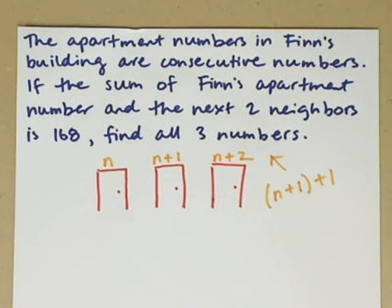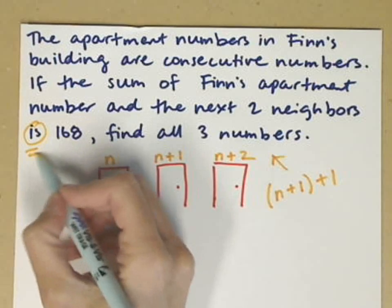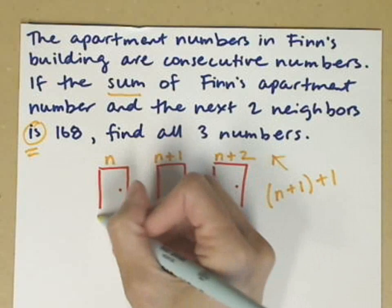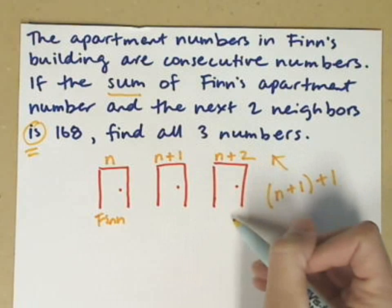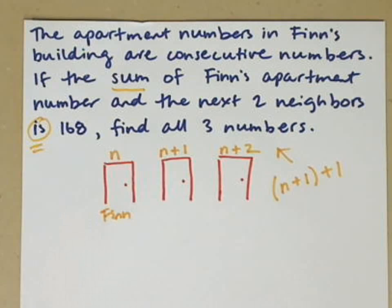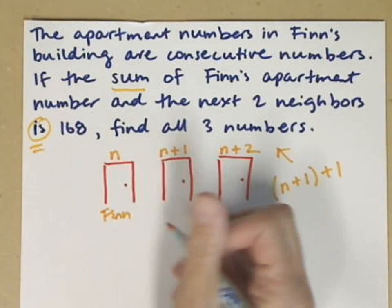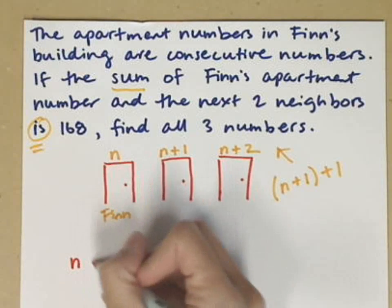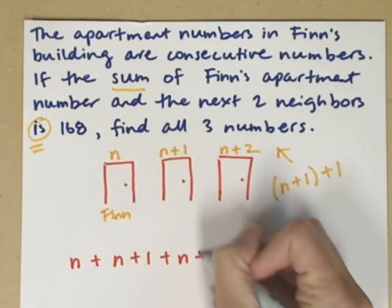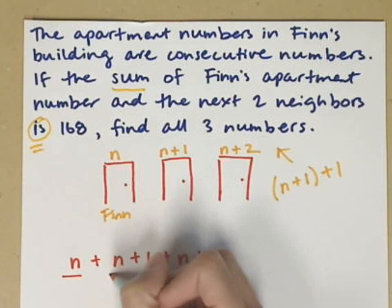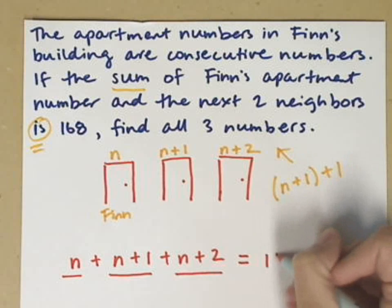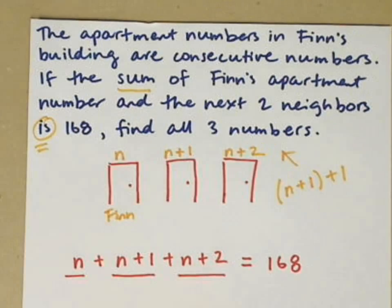Okay, where's our equation? Here's an is, so that's going to be my equal sign. Okay, so the sum, so I'm going to add these up, of Finn's apartment. So this could be Finn's. And this would be a neighbor and that would be a neighbor. So the sum of these apartment numbers is 168. We're going to put that into an equation. So apartment number 1 plus the next apartment plus the next apartment. And I'm going to underline those so you can see how these are, those three numbers. The sum is or equals 168.